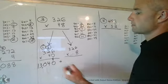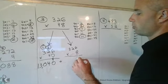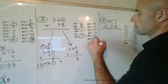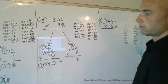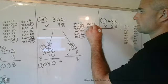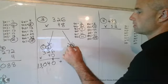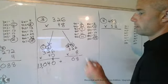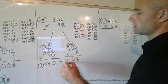Next, I'll do 6 times 8 is 48. Leave the 8, carry the 4. 8 times 2 is 16, plus the 4 gives you 20. Carry the 2 from the 20. 8 times 3 is 24, plus 2 equals 26.